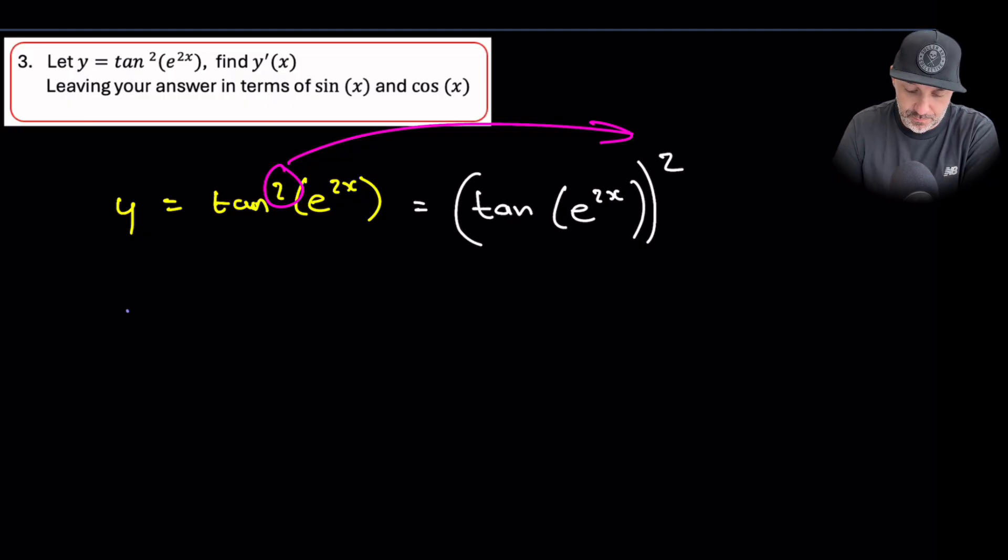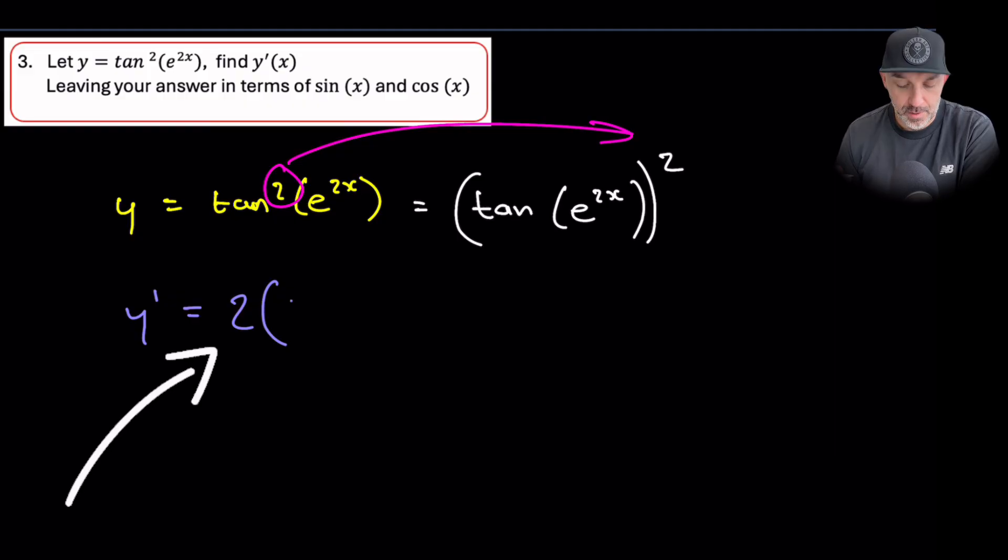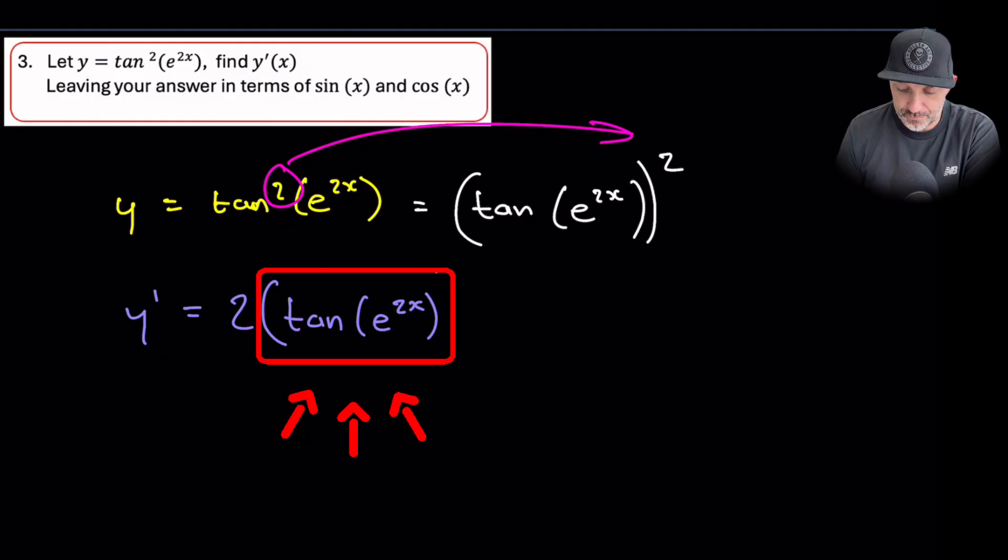When we want to find the derivative of this, so I'll jump down here now, y prime. Now, what we do is we're going to be using multiple rules here. So we've got chain rule to begin with. So we need to multiply by the power, then take one off the power. But if you do that, then everything inside the bracket stays exactly the same. And now we take one off the power.